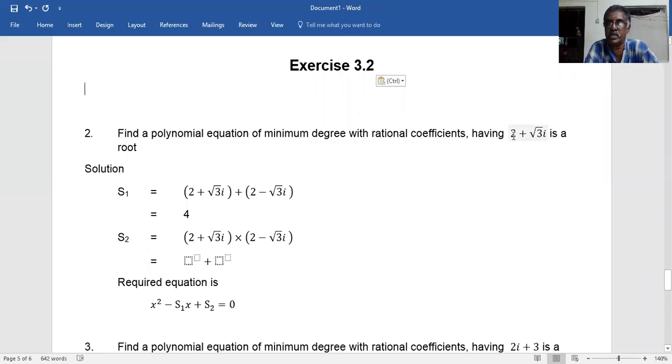Theory of Equations Exercise 3.2, second question. Find a polynomial equation of minimum degree with rational coefficients having 2 + √3i as a root.